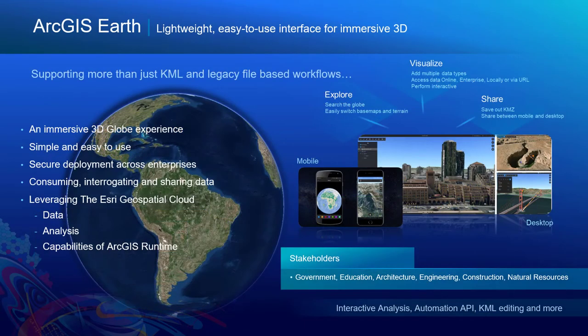ArcGIS Earth is a lightweight desktop client that's doing more than just its original role as a Google Earth replacement supporting KML. Both a desktop application and an Earth Mobile client, it includes visualizations with measurements, KML editing, and the ability to consume from portals — making it a great fit for both the intelligence community and education community.